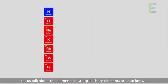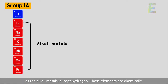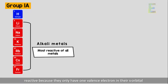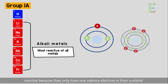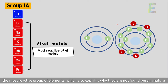The elements in Group 1A are also known as the alkali metals, except hydrogen. These elements are chemically reactive because they only have one valence electron in their S orbital. This means that they can easily lose their electrons during chemical reactions, which makes them the most reactive group of elements, and also explains why they are not found pure in nature.